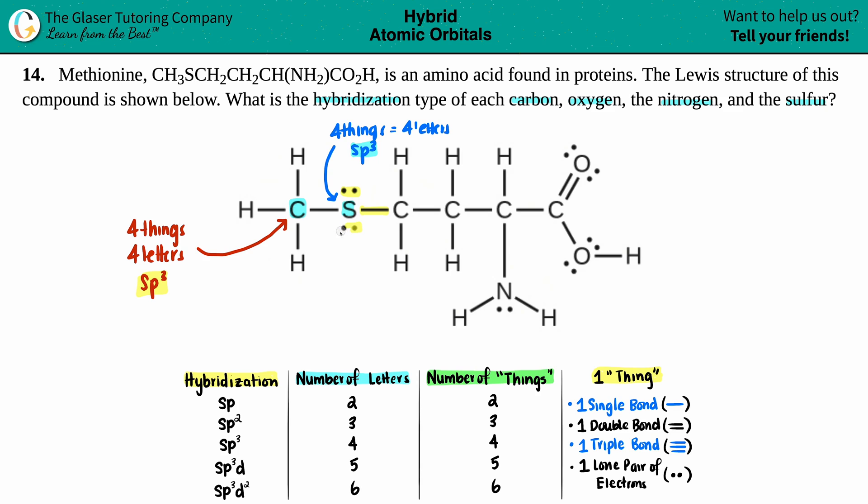Let's get rid of these so we don't get confused. We're moving on. Now we're going to this carbon. Let's see how fast we can do this. What's going on around this carbon? Single bond, one thing. Single bond, two things. Single bond, three things. Single bond, four things. I don't see any lone pairs. So four things, four letters. SP3. Bada bing, bada boom. How easy is that?